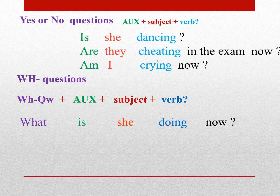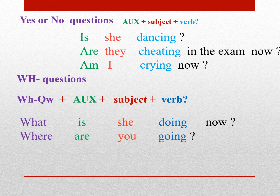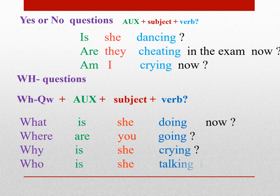For example: What is she doing now؟ اون دختره الان داره چه کار میکنه. Where are you going؟ داری کجا میری. Why is she crying؟ چرا داره گریه میکنه. Who is she talking to؟ داره با کی حرف میزنه.